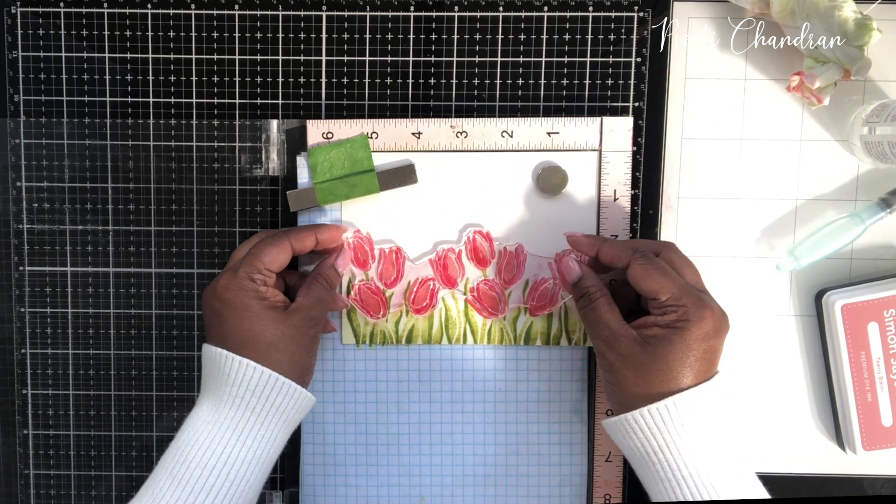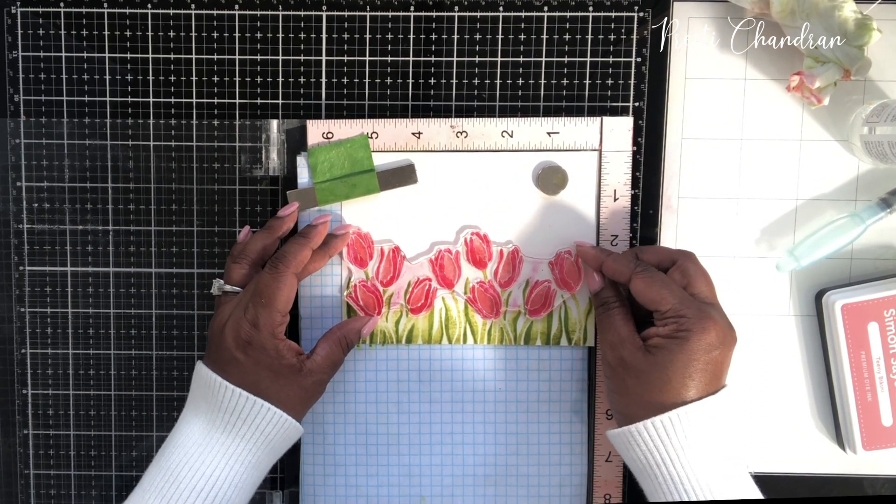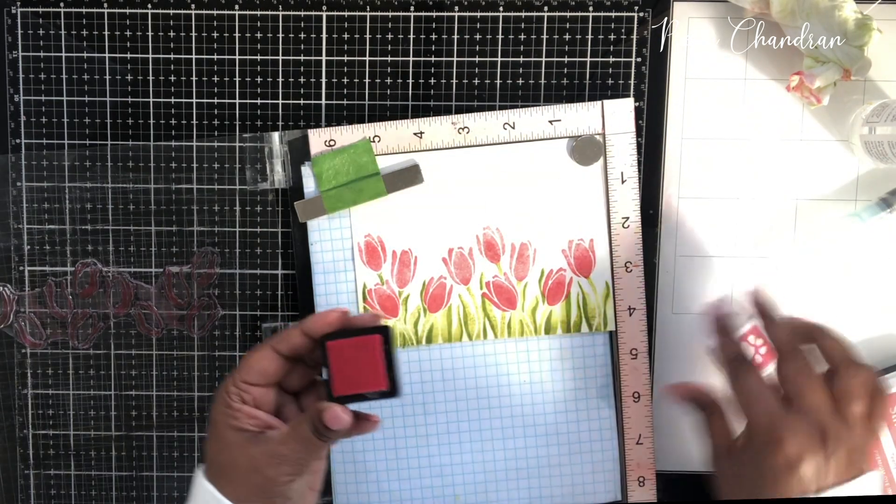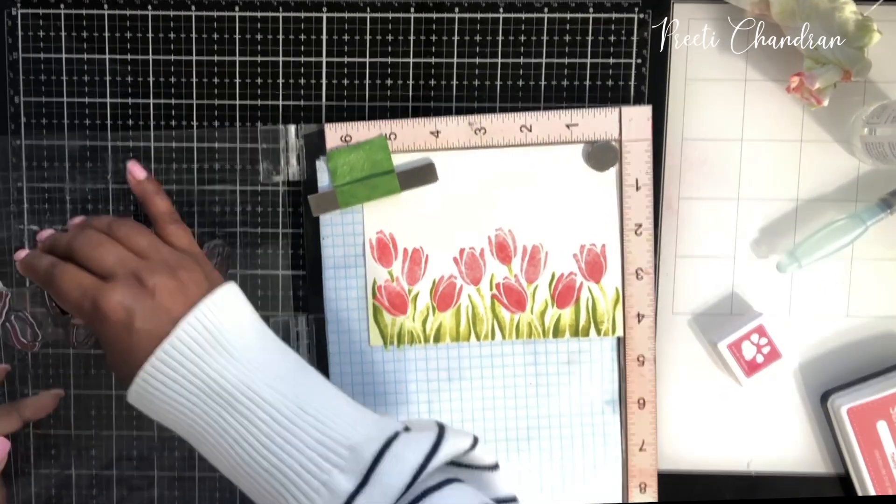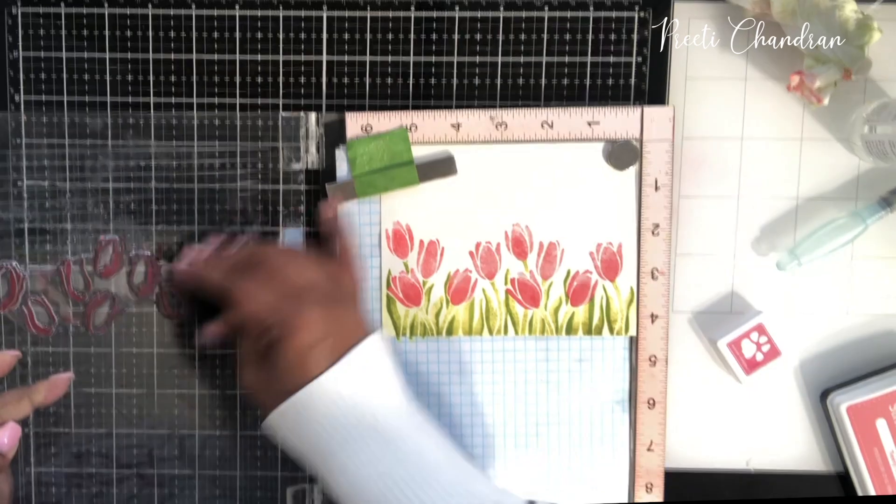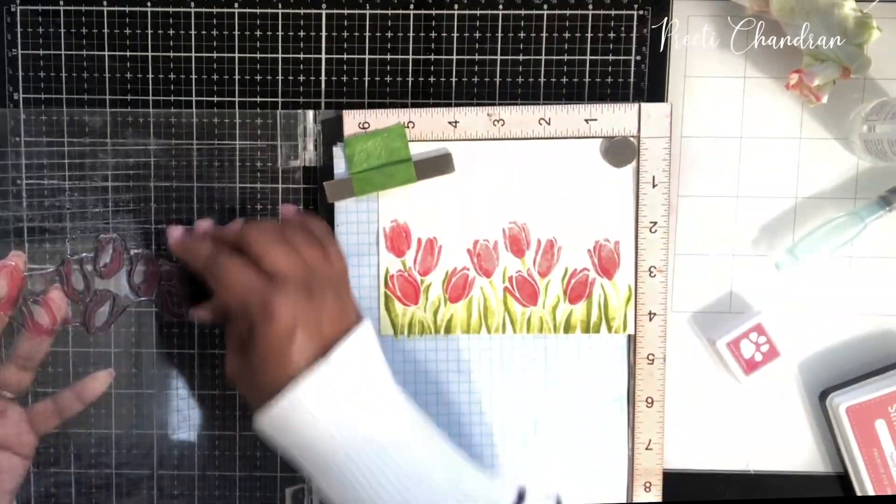This is the layer image, the shadow image for that tulip. This I used Hollyhock ink from Simon Says Stamp and it's a darker pink shade. I did the same thing. I just kept layering them one after the other, first directly, and then second and third time spritzing it with water.